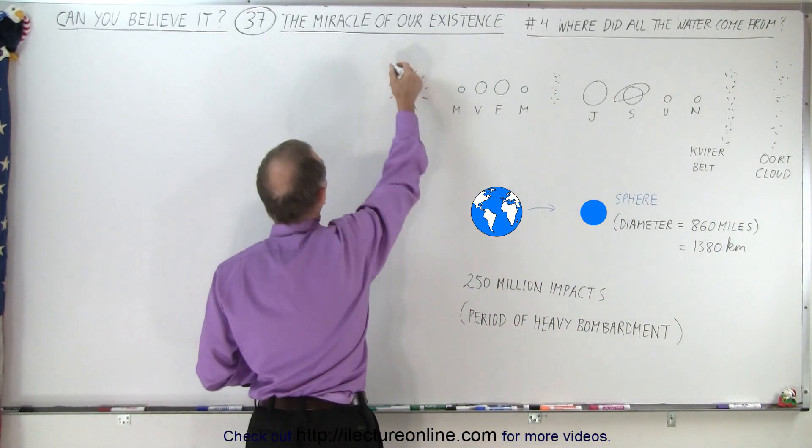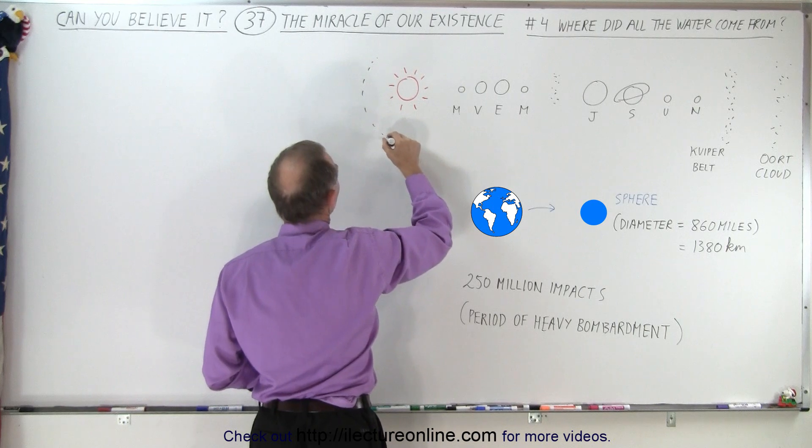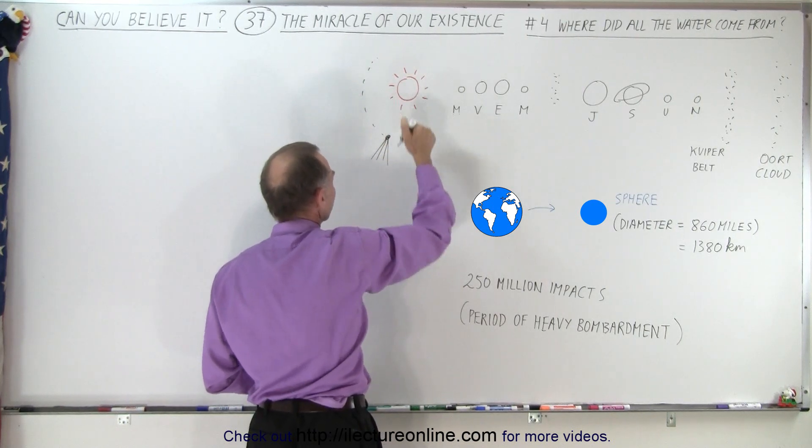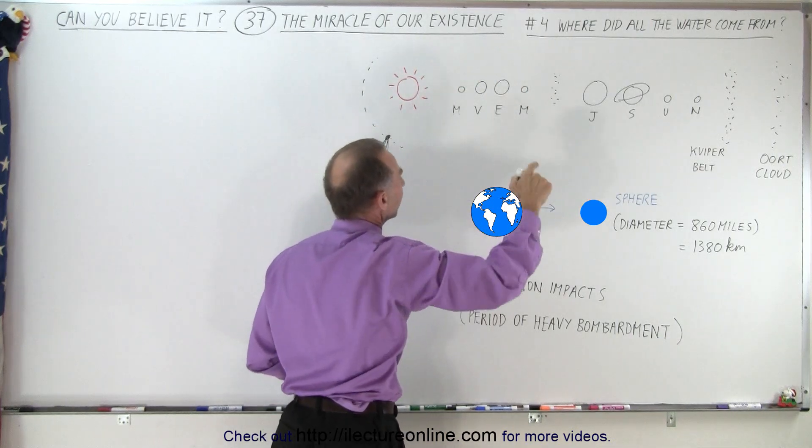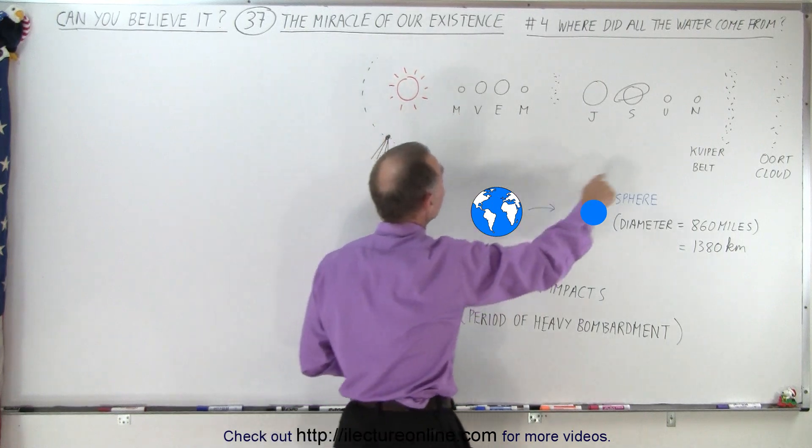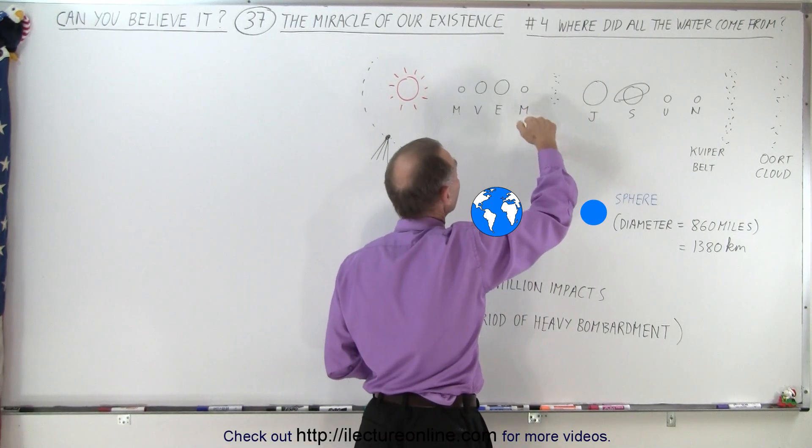The comets typically look like this. As they go around the sun, they always have a tail that points away from the sun because of the radiation pressure of the sun, and then it would go back into the distance and come back. But then, of course, once in a while, one of those comets would then impact one of the planets.